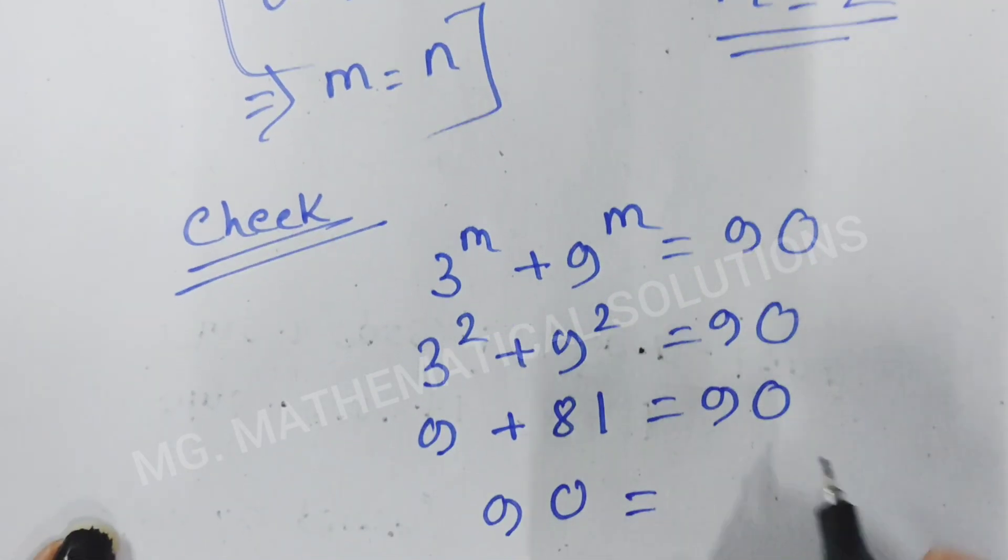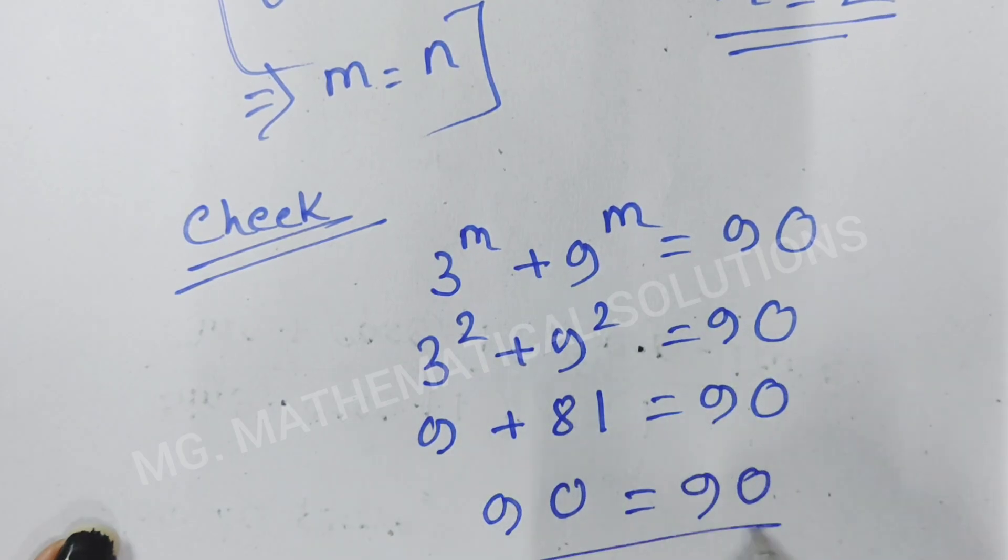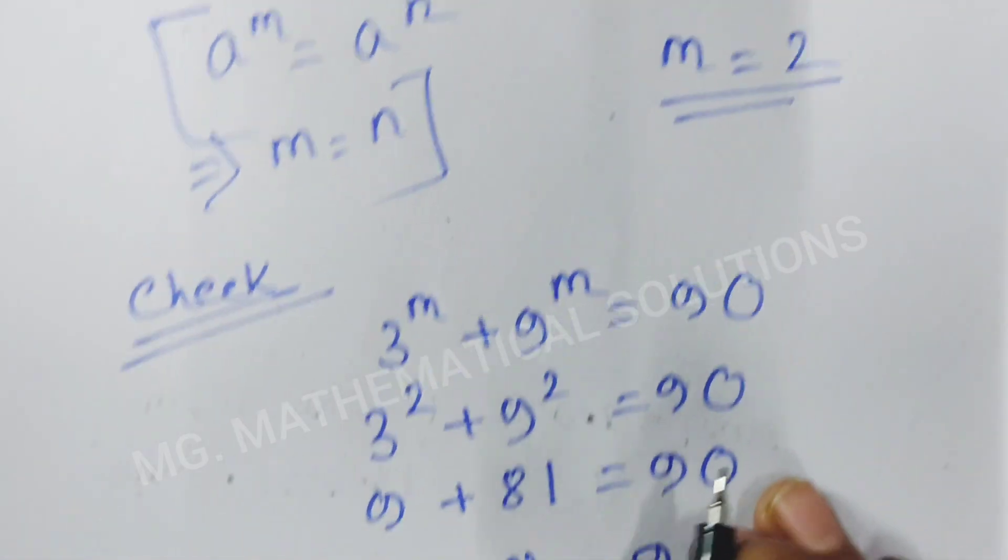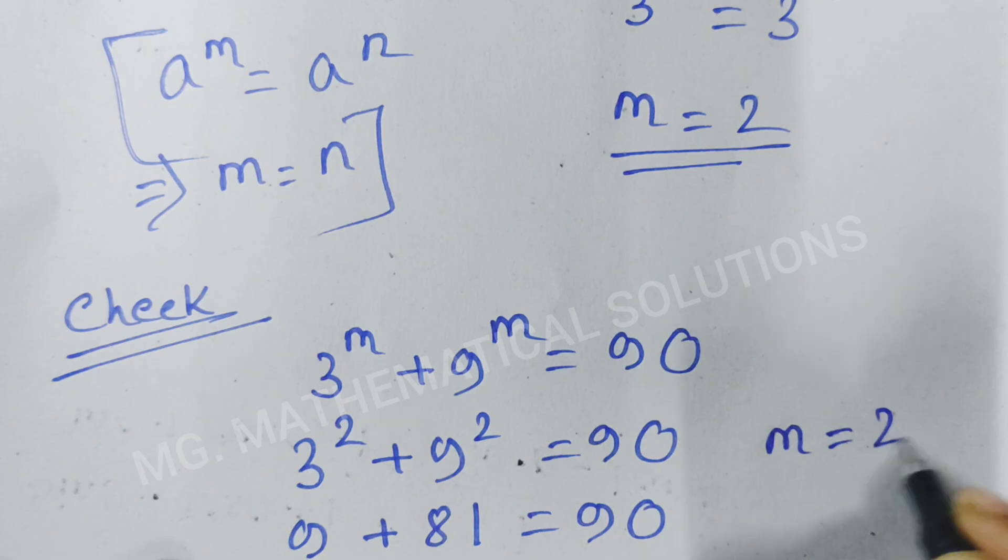90 equal to 90. Left hand side equal to right hand side. Hence, the value of m is 2.